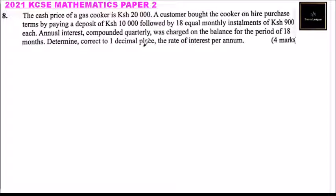This question is from the topic commercial arithmetic which you did in form three. We use this formula to get the amount paid on compound interest: A = P(1 + r/100)^n, where r is the rate of interest and n represents the number of times or intervals at which the loan will be paid.